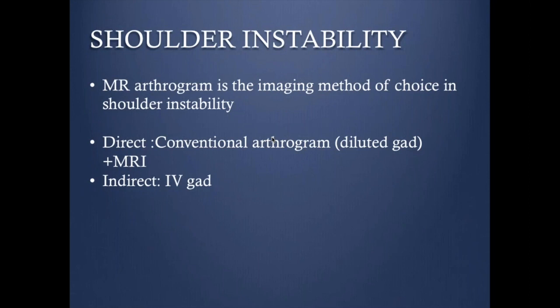There are two ways to perform the arthrogram. The direct method is the conventional arthrogram, where we inject diluted gadolinium inside the joint and then perform MRI. The indirect method involves injecting IV gadolinium, having the patient do some exercise, which allows some pooling of contrast inside the joint, then doing delayed images 10 to 15 minutes after.